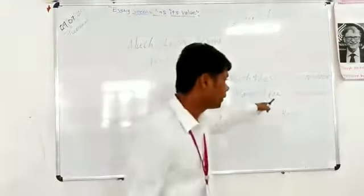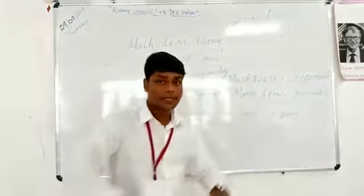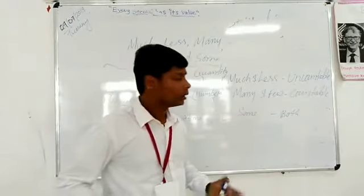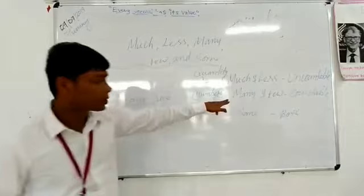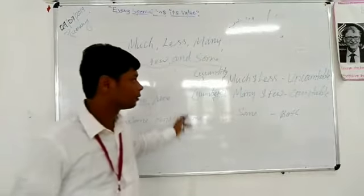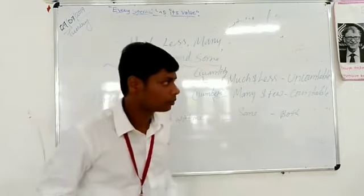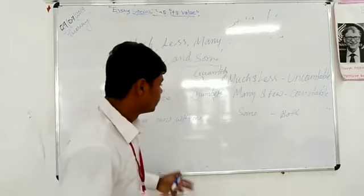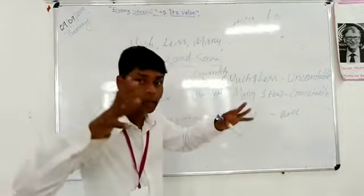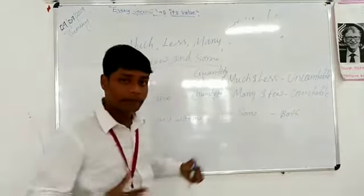'Many' and 'few' are determiners used with countable nouns — they state the number of a thing. 'Some' is special because it is used with both uncountable and countable nouns. Let us understand each one with examples.